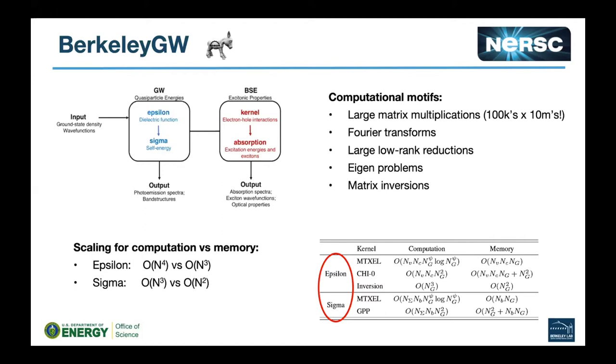Some of the computational motifs for Berkeley GW are matrix multiplications, Fourier transforms, large reductions, eigenvalue problems, and matrix inversions. But in Epsilon and Sigma we're mostly dealing with the first three. And when I say large scale, some of the matrices have hundreds of thousands of rows and millions of columns. So we're really dealing with large matrices and large calculations.